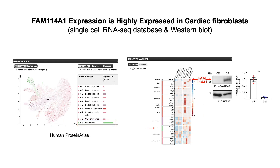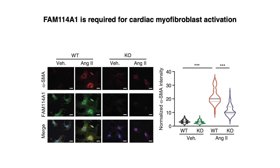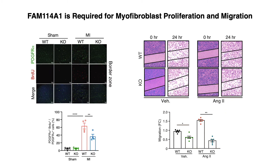Since single-cell RNA-seq and our Western blot data suggest that FAN141 is highly expressed in cardiac fibroblasts, we focused on determining the role of FAN141 in this cardiac cell type. Knockout of FAN141 inhibits cardiac fibroblast activation and myofibroblast formation, and also inhibits cell proliferation and migration.